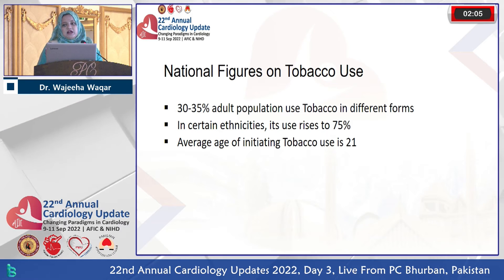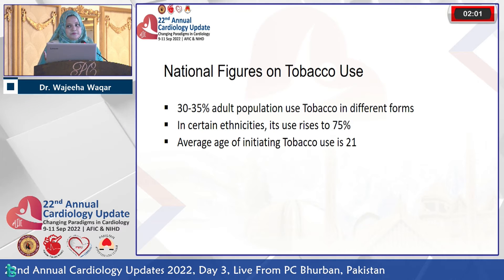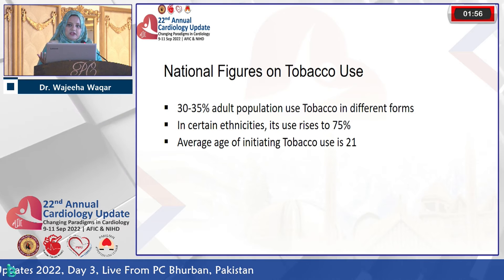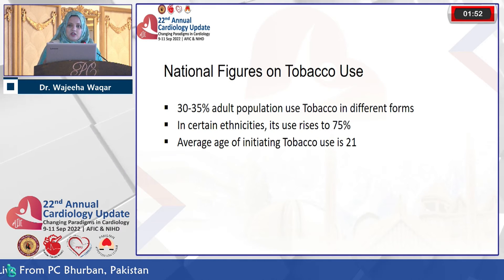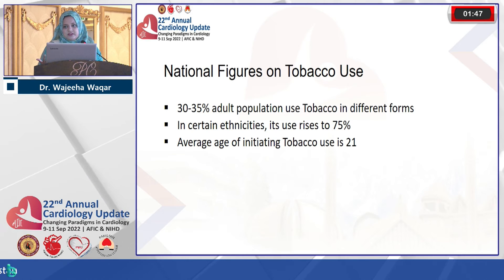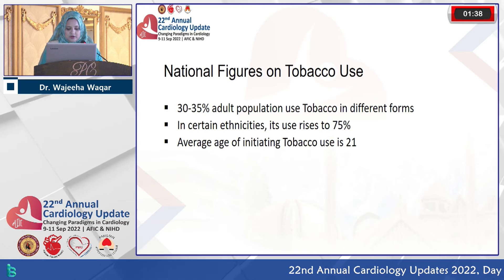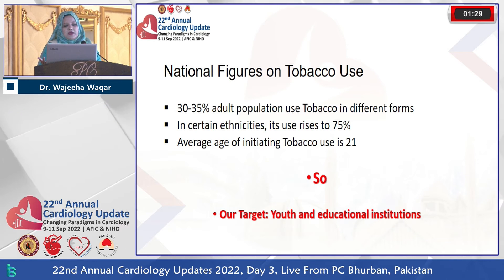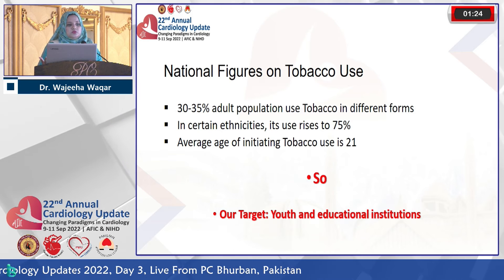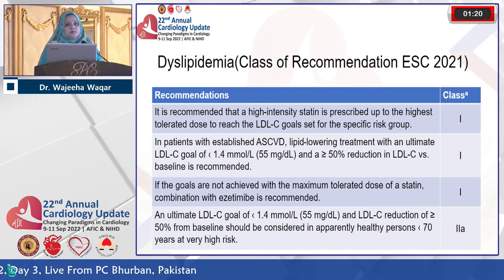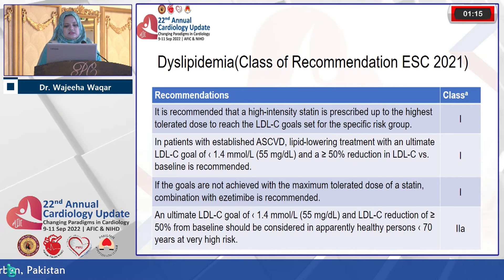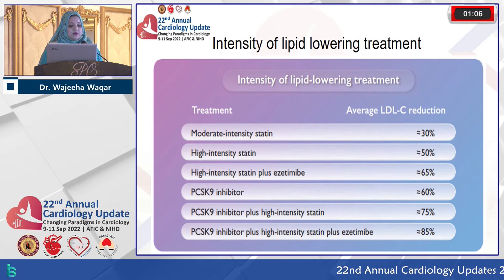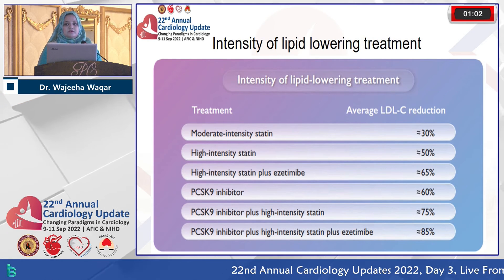One of my patients had been smoking for 45 years at 200 cigarettes per day. With the help of our psychologist, we achieved remarkable results — the patient is now down to five cigarettes per day, the family is very happy, and the cardiovascular burden has reduced dramatically. Regarding youth, the average age of initiating tobacco use is 21%, so our main target is youth and educational institutions. On dyslipidemia, the Class I indication is to start high-intensity statin therapy from the very beginning, and we are currently conducting a research study on this.